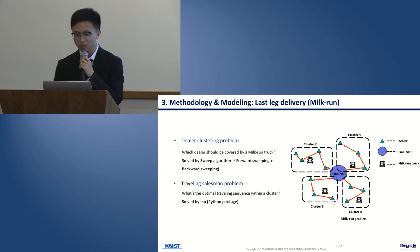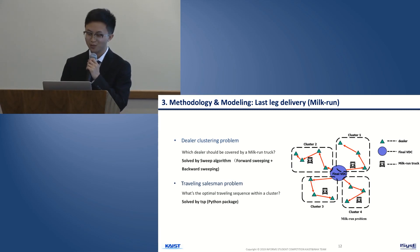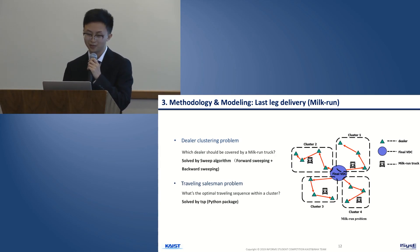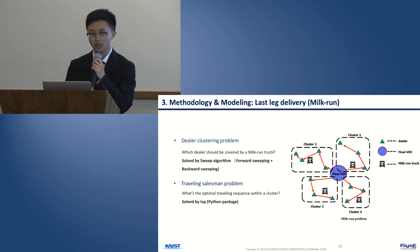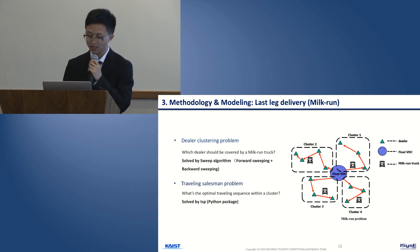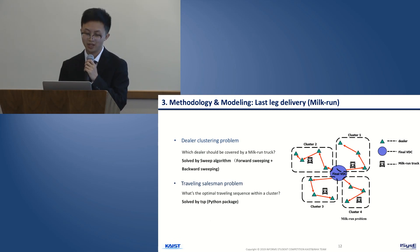For part two of our problem — the last-leg delivery — we decompose it into two sub-problems. The first sub-problem is the dealer clustering problem, focusing on which dealers should be covered by a milk-run truck. We solve this using the sweep algorithm, specifically implementing forward sweeping and backward sweeping to get better clustering results. The second sub-problem is the traveling salesman problem, which focuses on the optimal traveling sequence within a cluster. We solve this using the TSP algorithm inside a Python package.